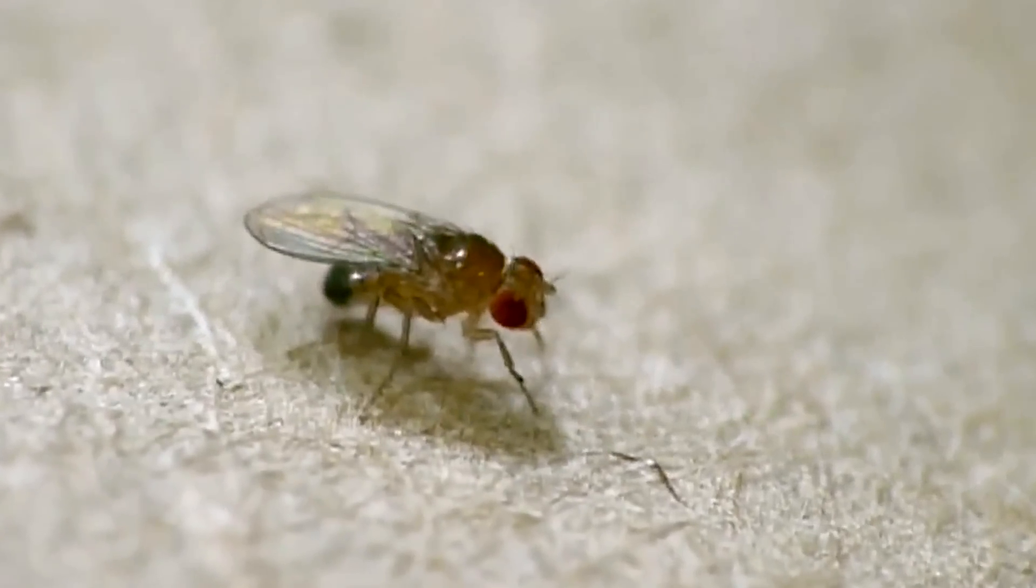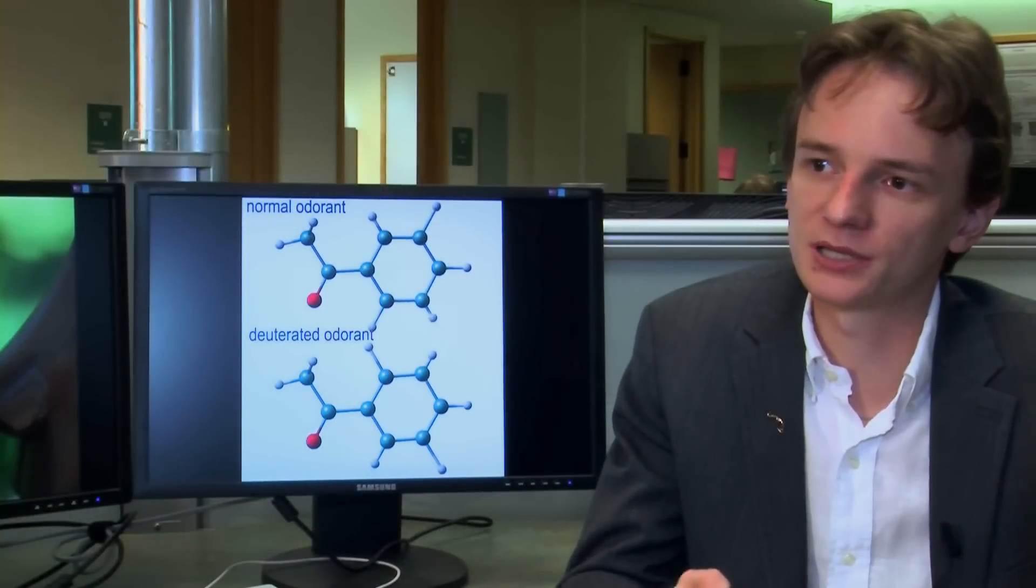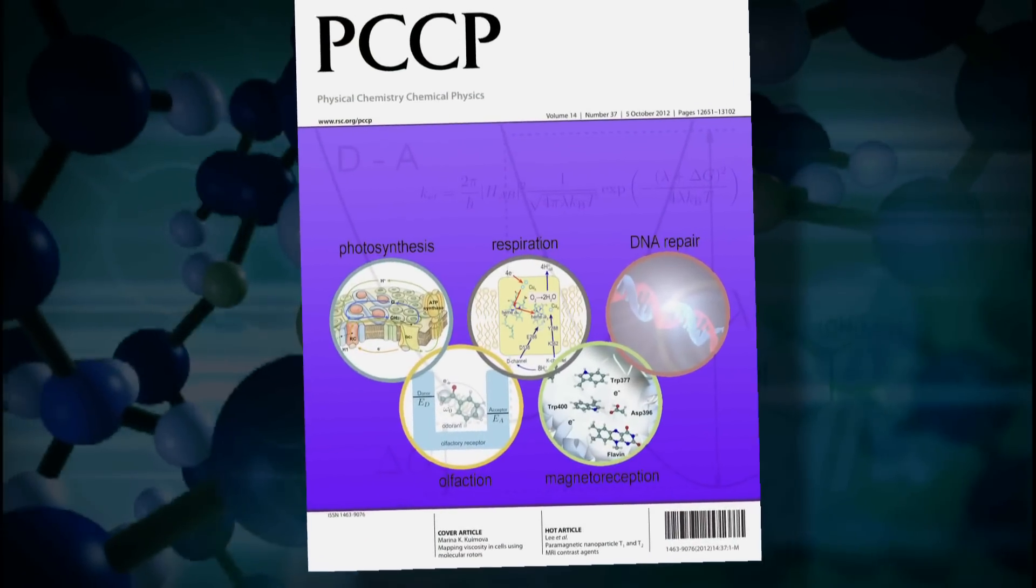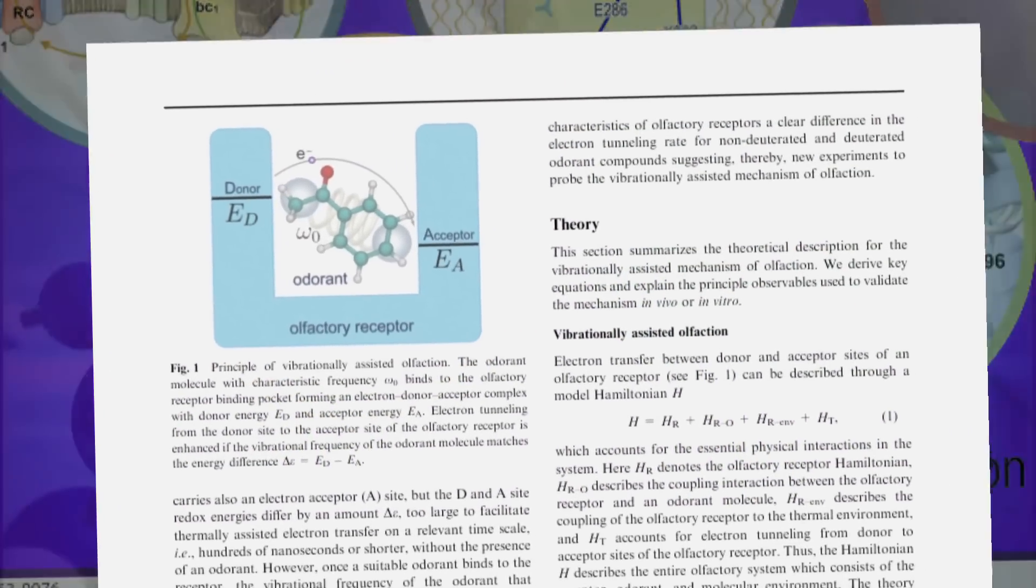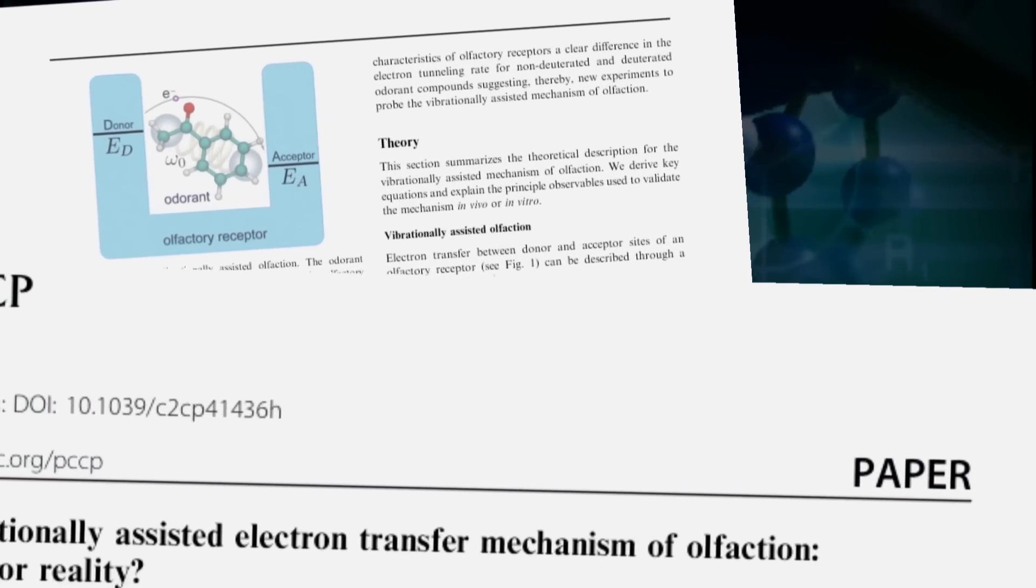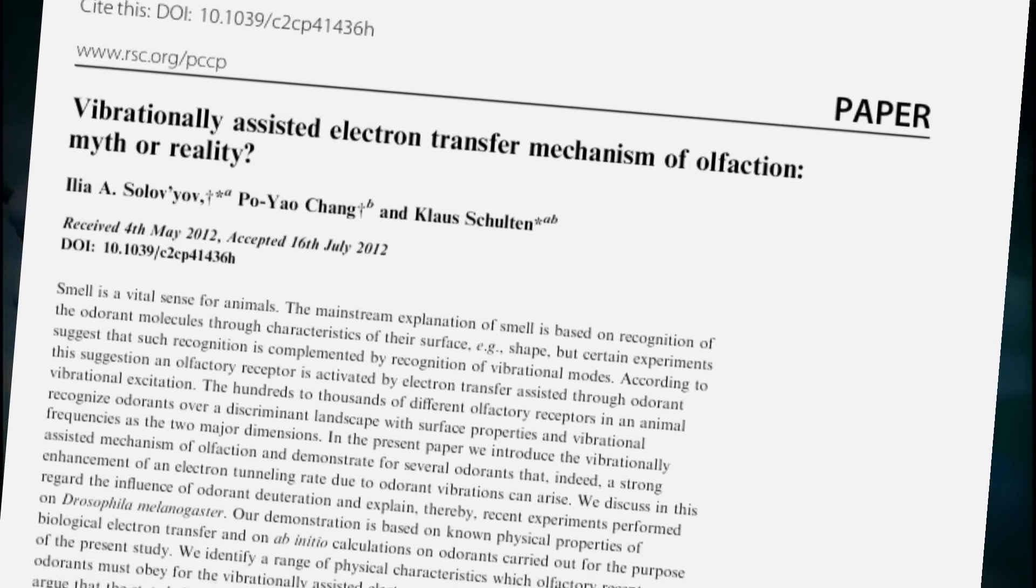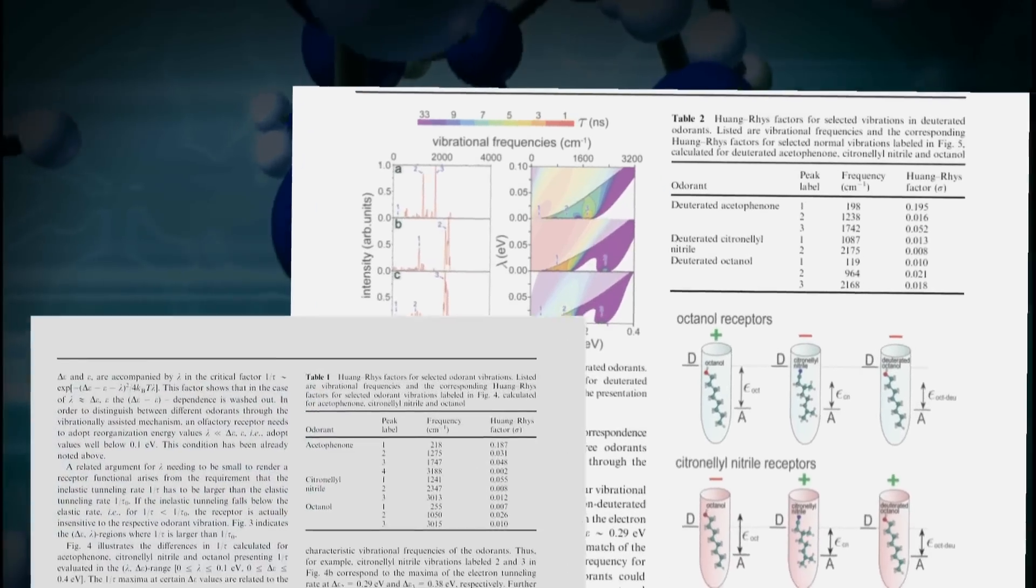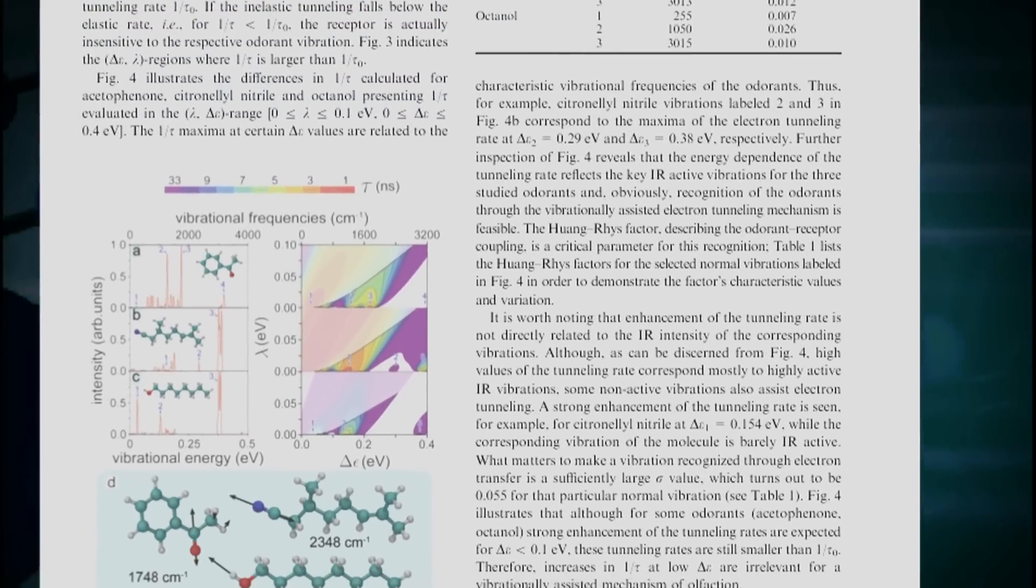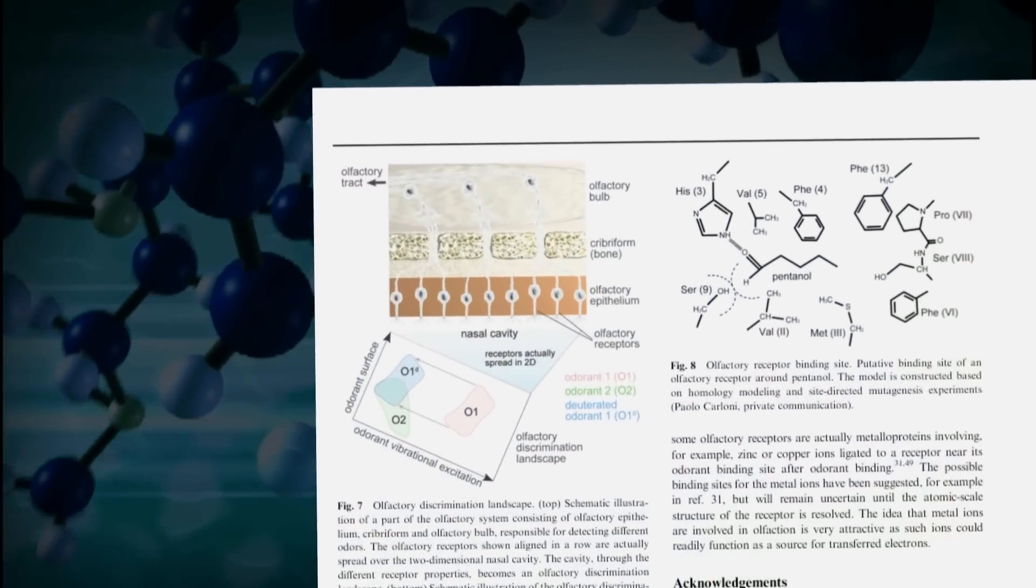The Greek paper is an experimental paper so it shows a clear experiment but it doesn't go into the details of the mechanism. In our paper we are really interested in understanding the mechanism behind this sense. We consider the same odorants as the scientists from Greece did and then we have calculated the vibrational frequencies for these molecules and demonstrated that for a particular vibration mode there is a very similar electron tunneling rate through the olfactory receptor which we indirectly could link with the main conclusion of the Greek scientists.